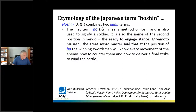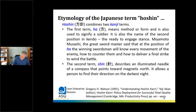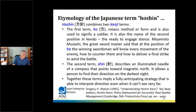At the stance of ho, the sword is behind you, you're looking at the enemy and ready to strike. Miyamoto Musashi, the great sword master, said that at the position of ho, the winning swordsman will know every movement of the enemy, how to counter them, and how to deliver the final strike to win the battle. The second term is shin — many people say it's a compass, but more specifically it describes the illuminated needle of a compass, pointing towards magnetic north, allowing you to find your direction even on the darkest night when you can't see the road ahead.